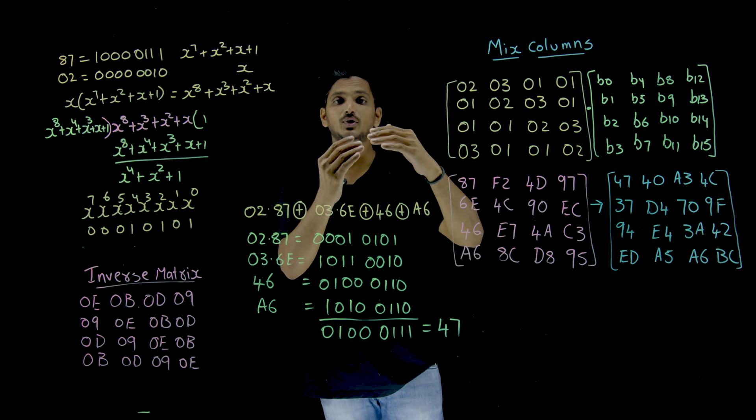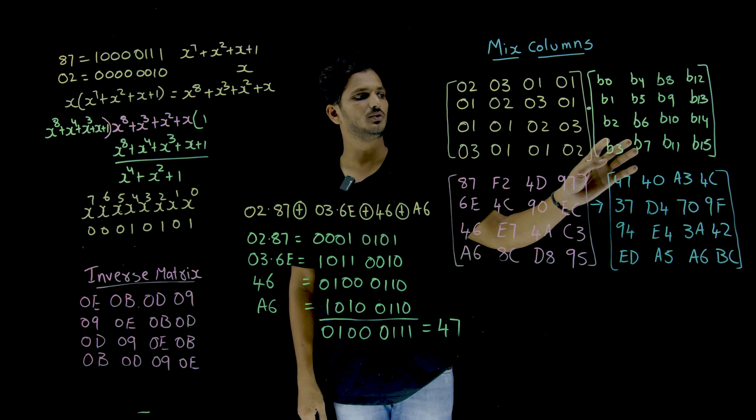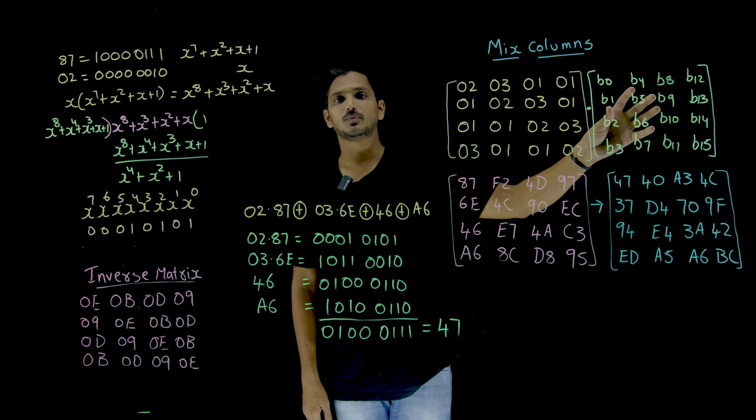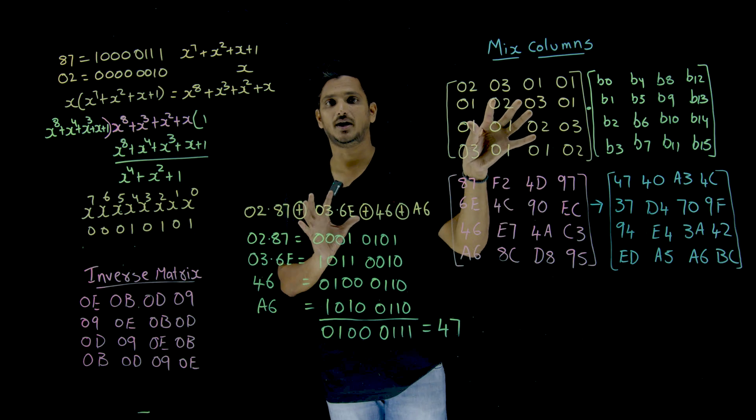So here let us take that. The output which we got from the second stage is we call this one B0, B1, B2, B3, B4, B6. This is how the state looks like, means 4 by 4 matrix. This should be multiplied by this constant matrix.